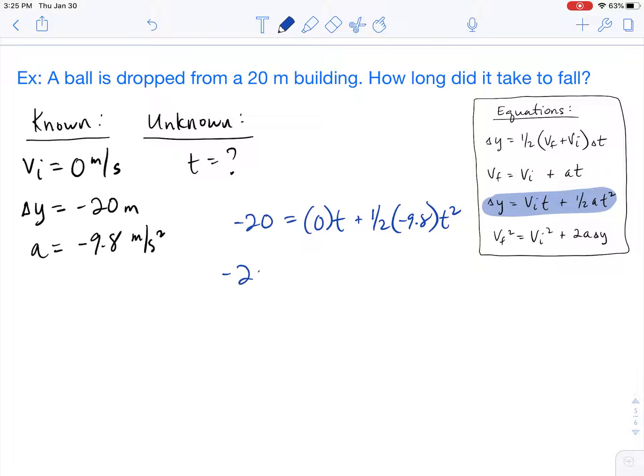When we solve, anything times 0 goes away so even though we don't know that t that becomes 0 so it goes away. So we're really left with one half times negative 9.8 which is negative 4.9 times t squared.